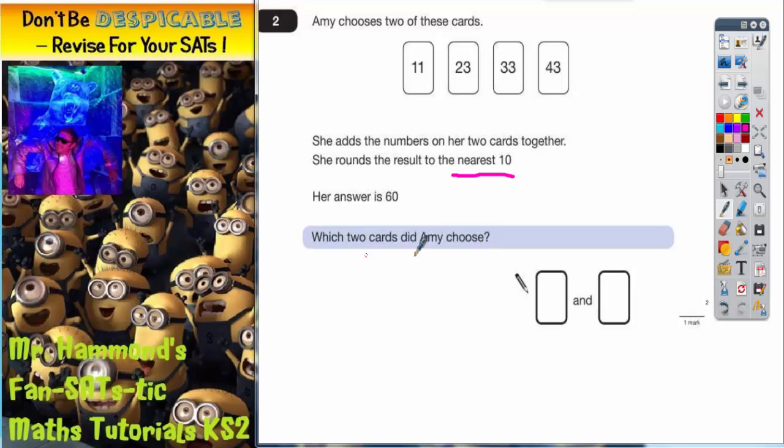Now I think it goes without saying that you've got to write two of these numbers in the boxes. If you write anything other than two of these numbers, you're going to automatically get it wrong. I have seen people put their own numbers in there before. It's got to be from these four. We're trying to round to the nearest 10 and end up with 60.